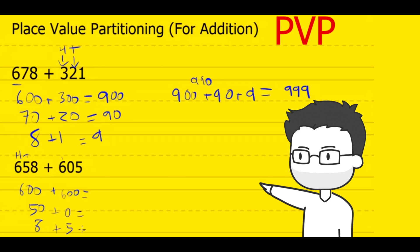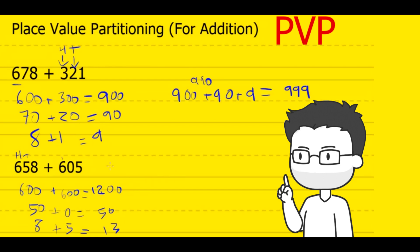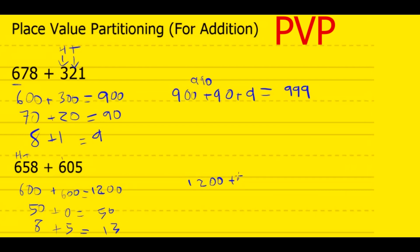Next, we add these numbers together. We have 600 plus 600, which equals 1,200. Next, we have 50 plus 0, which is 50, and 8 plus 5, which equals 13. Remember, the third and final step is to recombine these place value parts together. So we add 1,200 with 50 plus 13. 1,200 plus 50 gives you 1,250, plus 13 equals 1,263.